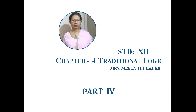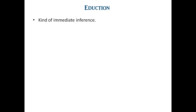Today we will study part 4 of chapter 4 of traditional logic. In this chapter we are going to study eductions. Eductions are those forms of immediate inferences in which from a given proposition we deduce another proposition differing from it in subject, predicate, or in both. The truth of the conclusion is implied by the truth of the premise — if the premise is true then the conclusion is also true, and if the conclusion is false then the premise is false. There are 7 kinds of eductions, out of which 2 are fundamental: conversion and aversion.